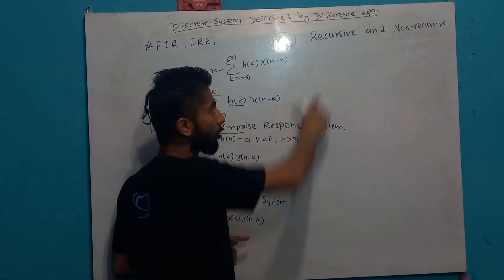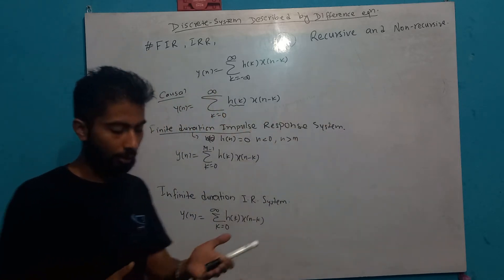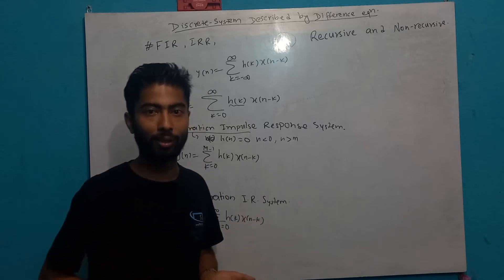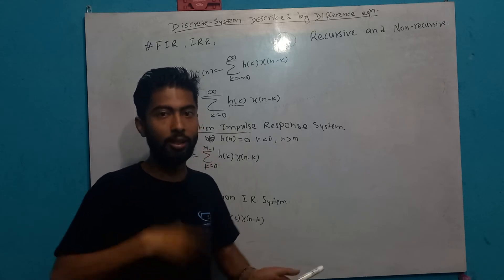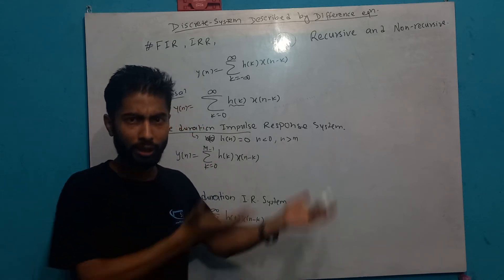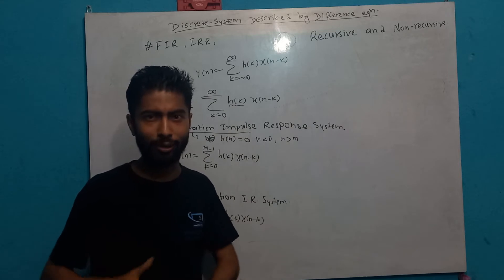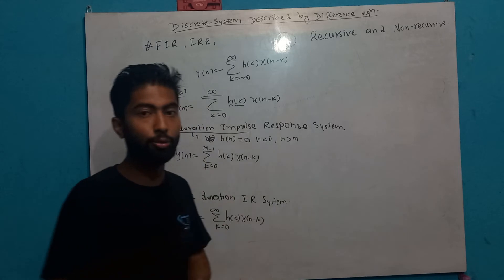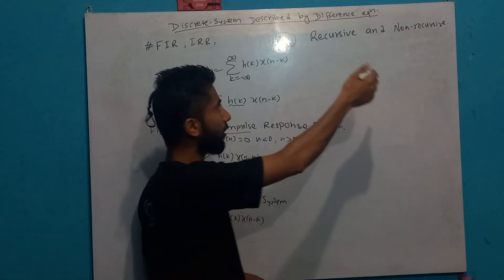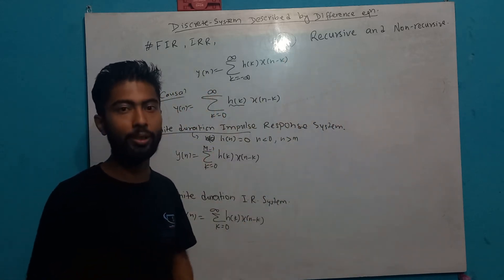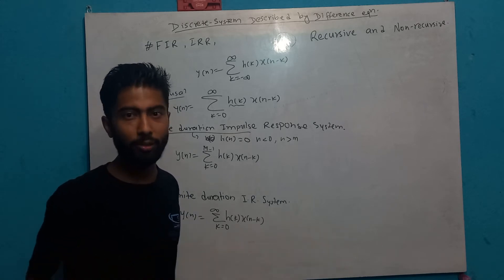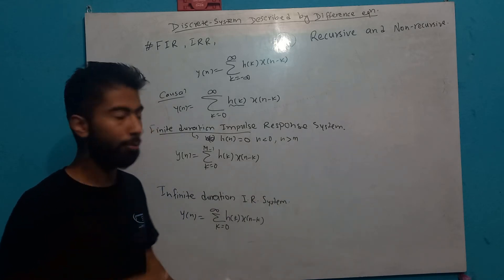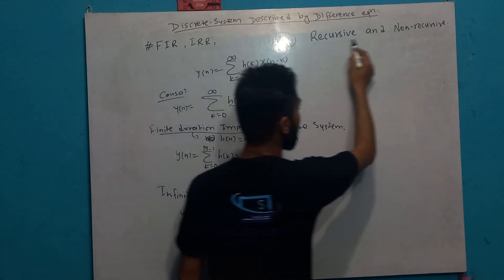The system will depend on our previous output, so it will be recursive — just like a feedback loop. We call it a recursive function, using the past output. In a non-recursive system, we don't have a feedback loop; we only use the input.